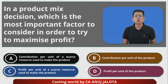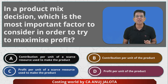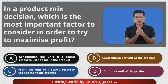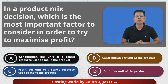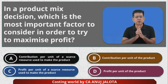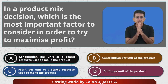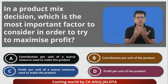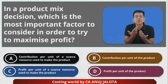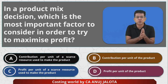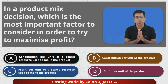Options C and D are nonsense answers because they deal with profit per unit — there is no such concept in this world. For profit to be per unit, fixed cost would also have to be per unit, but fixed cost is not a per-unit concept; it is a period concept. When we produce one unit, we don't incur rent, salaries, or depreciation. So there is no such thing as profit per unit. C and D are crossed out.